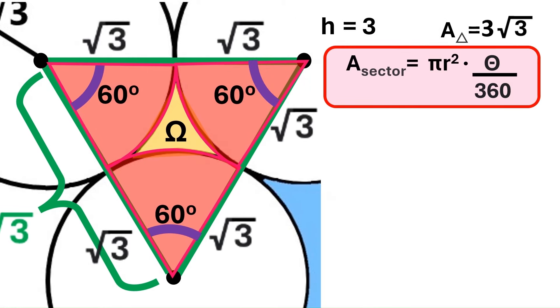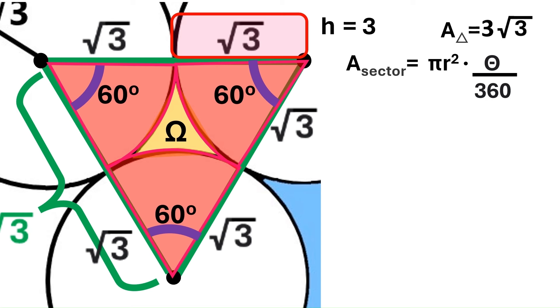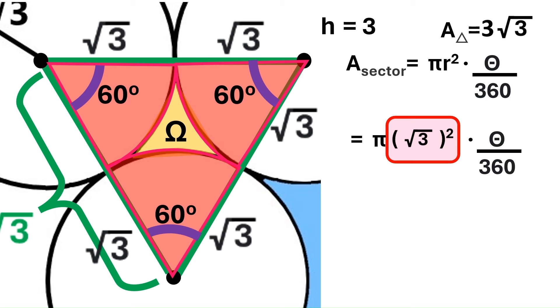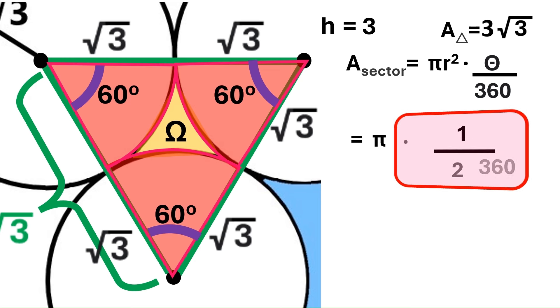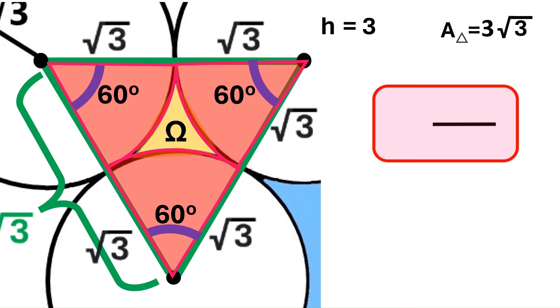This is the formula for the area of a circular sector. We know the radius of the small circles is radical 3, so we can replace r squared with radical 3 squared, and it becomes 3. This angle theta is the angle of the sector, and we know it's 60, so we'll put 60 here. 60 over 360 is 1 over 6. 3 times 1 over 6 is 1 over 2. Then, the area of one sector is pi over 2.